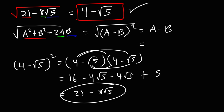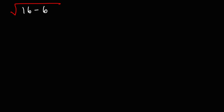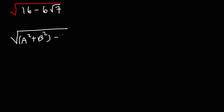Now for the sake of practice, let's try another one. Let's say we have the square root of 16 minus 6 square root 7. Use the process that we've used earlier to simplify this radical expression. We're going to see if it's in the form a squared plus b squared minus 2ab.